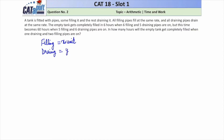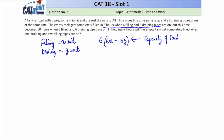From the first condition: it takes six hours when six filling and five draining pipes are on. Filling pipes do positive work and draining pipes do negative work. So six filling pipes do 6X units of work and five draining pipes do 5Y units of work. This system takes six hours to fill the tank, so the capacity of the tank equals 6(6X − 5Y).